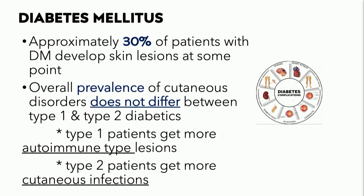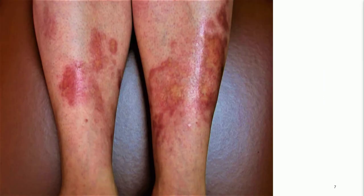Let's start with dermatologic manifestations of endocrine disorders, like in diabetes. Approximately 30% of individuals with diabetes will develop skin lesions at some point during their disease. The prevalence of cutaneous findings doesn't really differ between type 1 and type 2 diabetics. However, type 1 diabetics tend to have more autoimmune phenomena, while type 2 diabetics tend to have more cutaneous infectious manifestations.